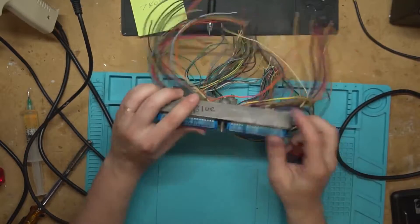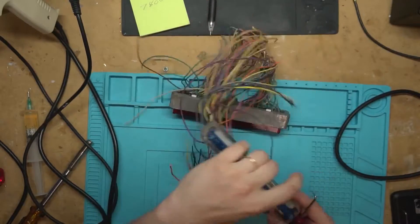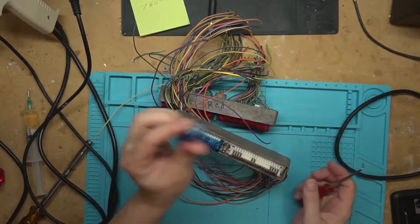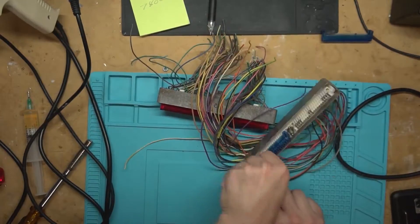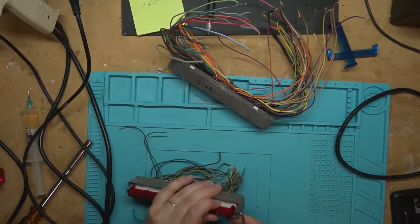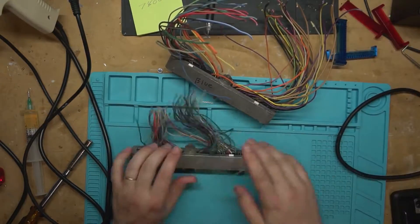First thing you've got to do is get these guys off of here. So just take a little mechanics pick here, and there's a little tab right there. You're just going to push down on it, and then you can pull these right off.